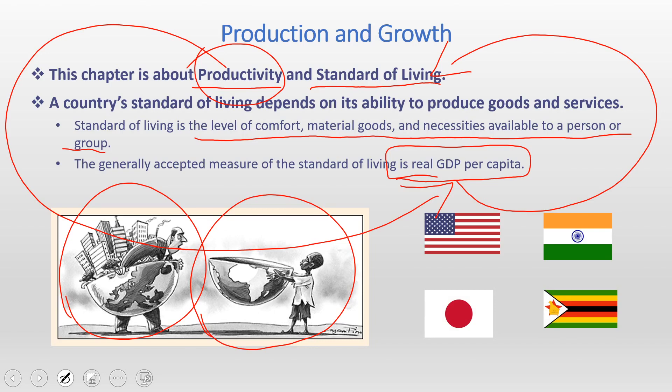There are more than 200 countries in the world. Many of them have a good standard of living, but a lot also have very poor standard of living. A good standard of living country will have people who have food, shelter, a car, and a house for most of the population.